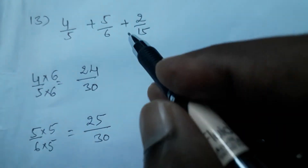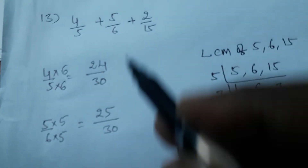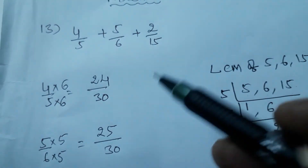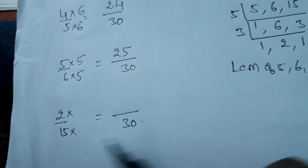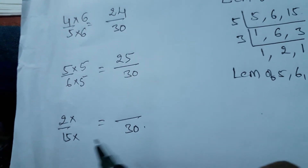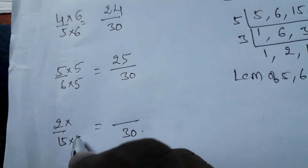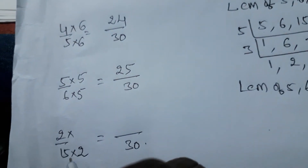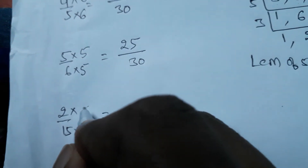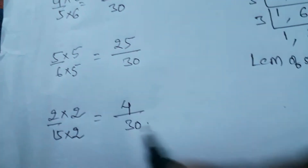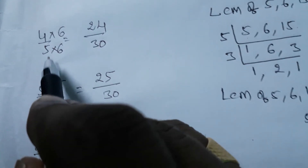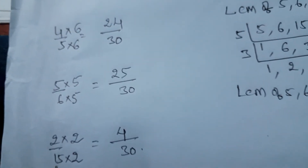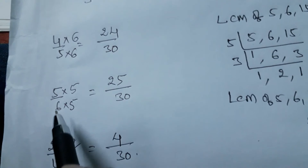For 2/15: to get denominator 30, multiply 15 by 2. So also multiply numerator by 2: 2 × 2 = 4. The equal fraction is 4/30. Now we have all like fractions: 24/30, 25/30, and 4/30. Each pair of original and converted fractions are equal because we multiplied numerator and denominator by the same number.